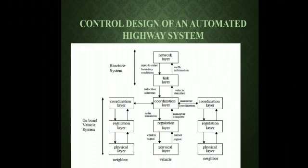Suppose you are driving a car on a highway. There are two main things to automate: the roadside system and the onboard vehicle system. In the roadside system, the link layer is connected to the network layer, which provides traffic information. The network layer relays boundary conditions back to the link layer. These two layers — network and link — are connected to the vehicle's onboard system. The coordination layer is responsible for calculating the distance between vehicles driving on the road, coordinating with other vehicles to prevent accidents on the highway.